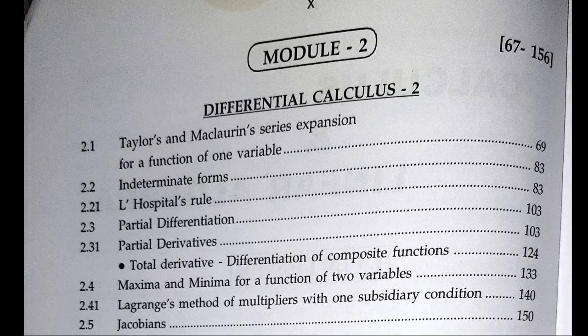Model 2 covers important topics: Taylor's and Maclaurin's series, L'Hopital's rule, Jacobians, and partial differential derivatives. We are going to discuss the trick to make this easy work. So the suggested topics are Taylor's and Maclaurin's series expansion, L'Hopital's rule, and Jacobians. Here is our trick for easy work. First, Taylor's and Maclaurin's expansion — that is how we are going to mark it.